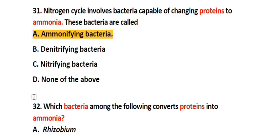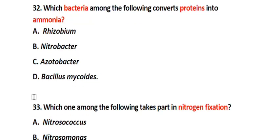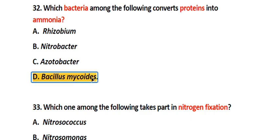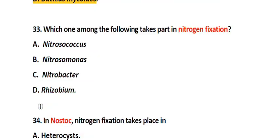Question number 32. Which bacteria among the following convert protein into ammonia? Option A. Rhizobium, Option B. Nitrobacter, Option C. Azotobacter, Option D. Bacillus mycoides. The correct answer is Option D. Bacillus mycoides.